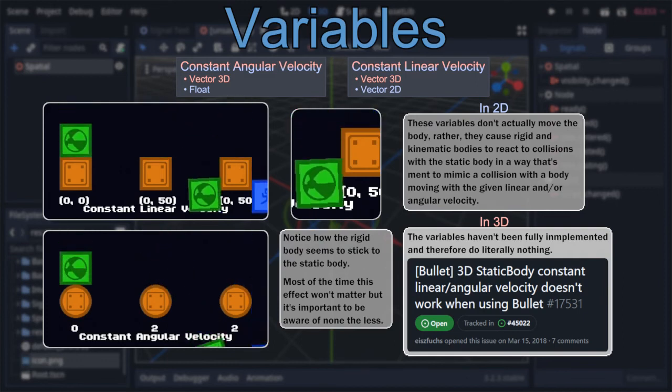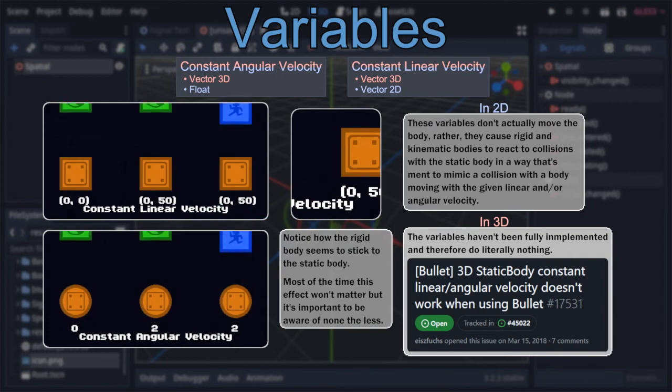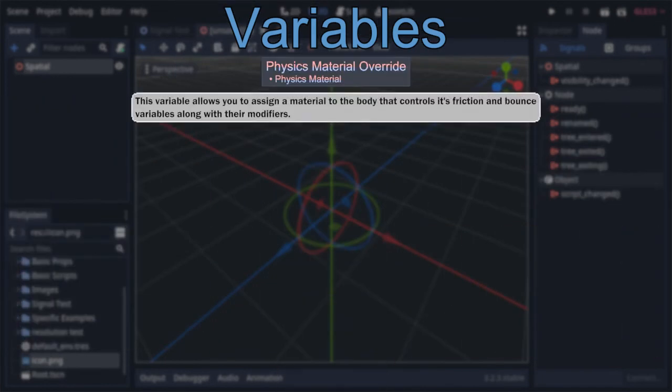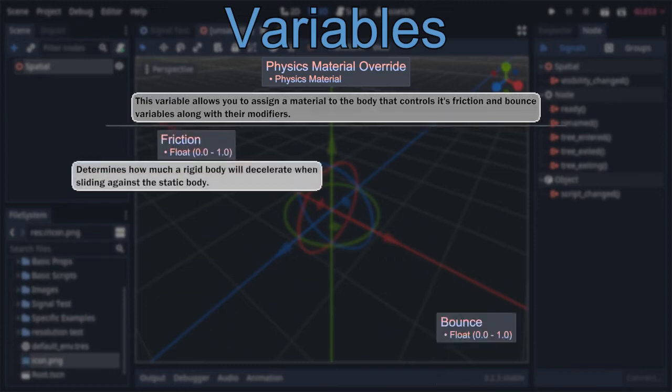Beyond those, the only other non-inherited variable within static bodies is physics material override, a variable they actually share with rigid bodies, allowing you to assign the body a physics material which contains the friction and bounce variables, along with their modifiers.